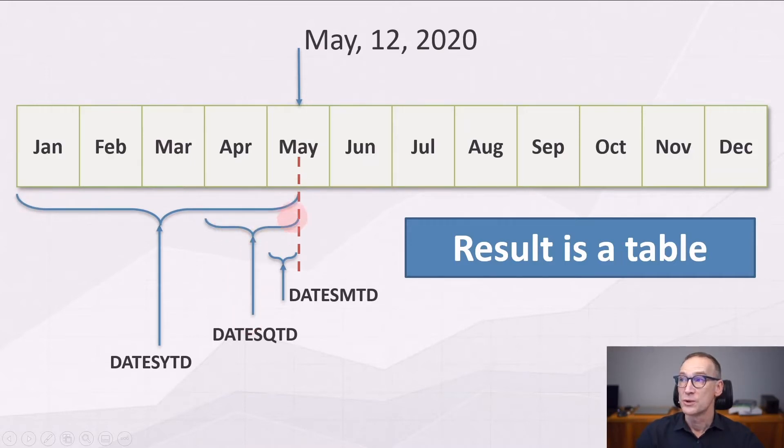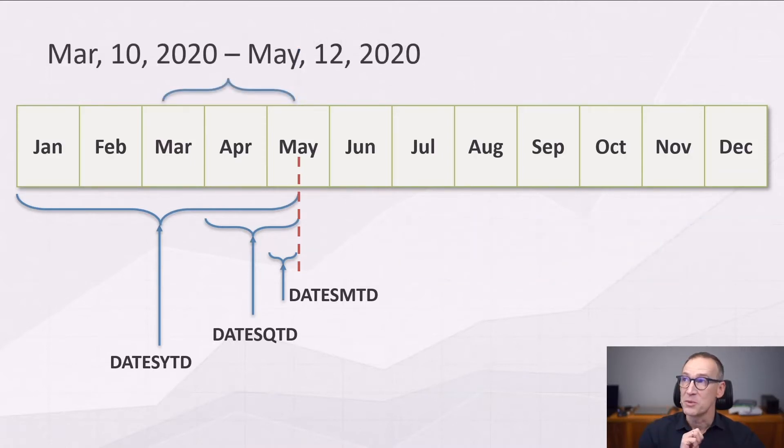DatesQuarterToDate returns the quarter-to-date, so from the 1st of April up to the 12th of May, and DatesMTD returns all the dates in the current month, starting from the 1st of May and reaching the end of the current period. So if you have only one day in the selection, the result is just simple.